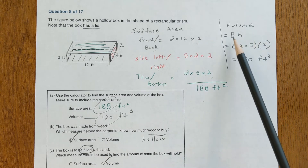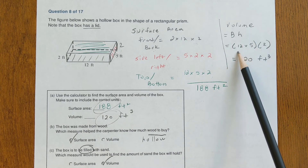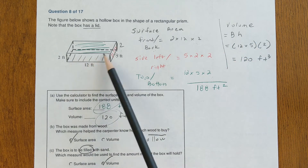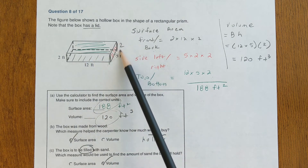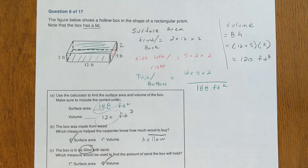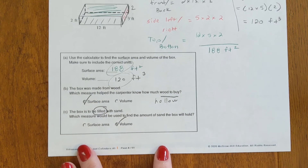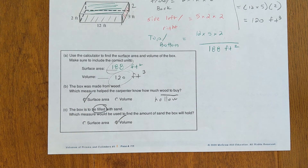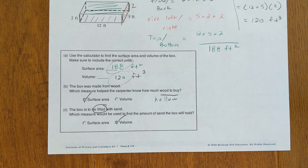The volume of the box is area of the base times the height: the base is 12 by 5, times the height of 2, giving 120 feet cubed. Part b asks how much wood is needed — wood covers the outside, so that's surface area, not volume. Part c asks about filling it with water or sand — how much it holds is volume.